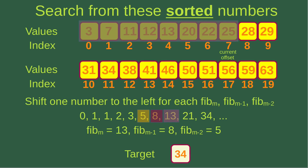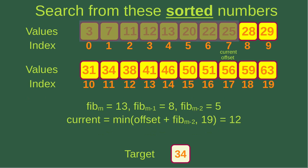I repeat the process by shifting one number to the left for each of the Fibonacci numbers M, M-1, and M-2. After shifting, Fibonacci M is 13, Fibonacci M-1 is 8, and Fibonacci M-2 is 5. Now offset is 7 and Fibonacci M-2 is 5, so 7 plus 5 is 12. The minimum of 12 and 19 is 12, so the current index becomes 12.